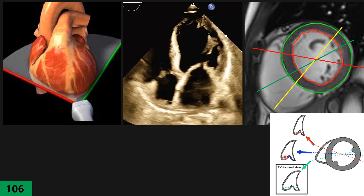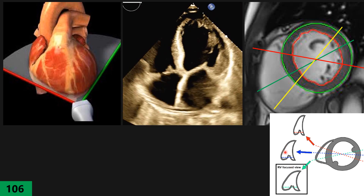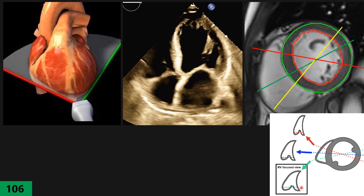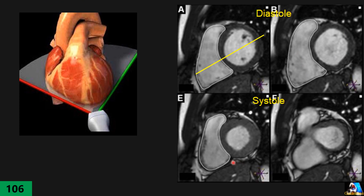At the same time, in their standard guidelines they also mention we measure base and mid on the RV. If the RV focused view gives the largest diameter, why do we also measure there in the standard? There is a slight contradiction. In my opinion, the RV focused view is essentially the same as the apical four chamber standard, just with a different angle of insonation.